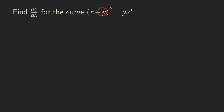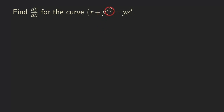First, we are going to differentiate the left-hand side. When we differentiate this left-hand side, we are going to use the general power rule as well as the chain rule at the same time, because there are inner functions inside this outer function of square. So we are going to take the derivative of the outer function, which is just a quantity squared, and use the power rule — bringing down the square to the front.